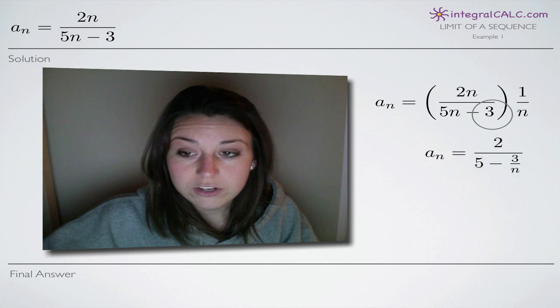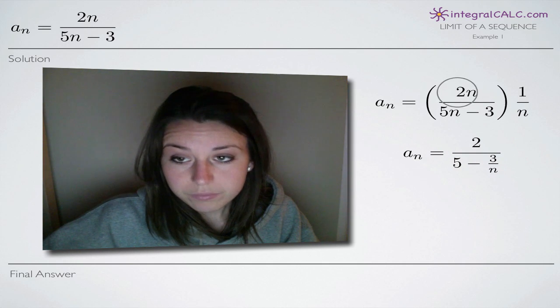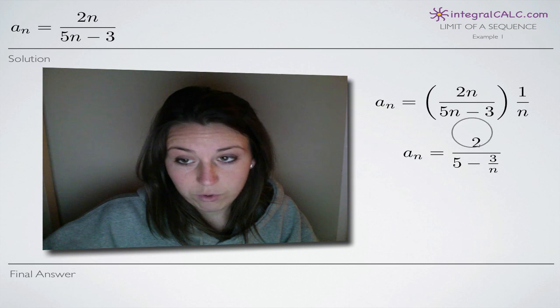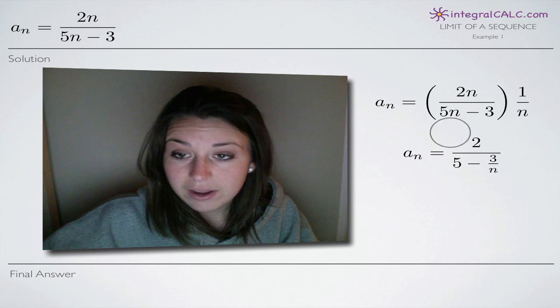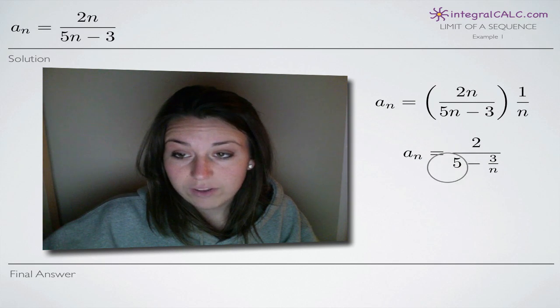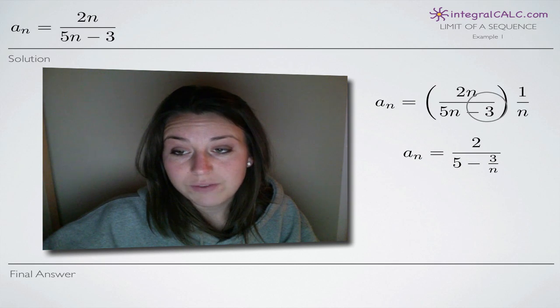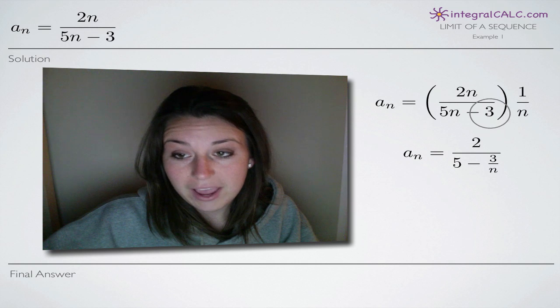When we do that: when we divide 2n by n, we'll get 2. When we divide 5n by n, we'll get 5. And when we divide 3 by n, we'll get 3 over n.